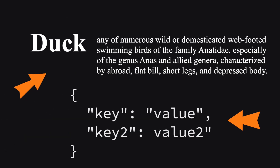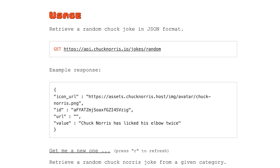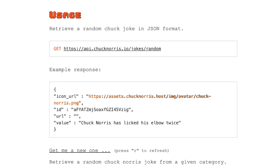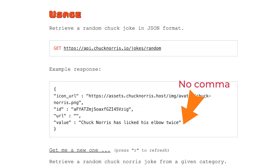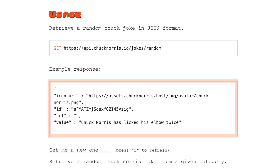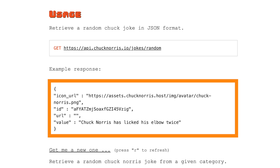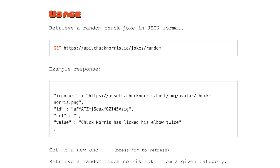In that way, objects and dictionaries are very similar. The first key-value pair we have here is the key 'icon_url' with the value of a URL that points to an icon. Key-value pairs are always separated with a colon and end with a comma, except for the last key-value pair. This is how you will see all JSON objects formatted: first with a left brace, followed by key-value pairs, and then at the end a right brace.